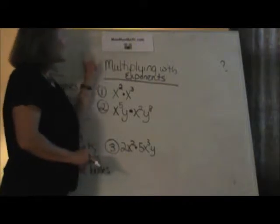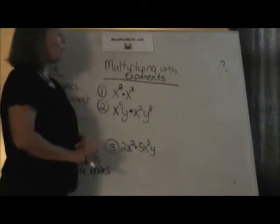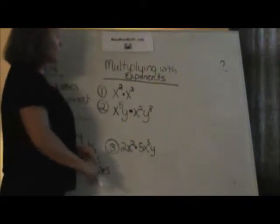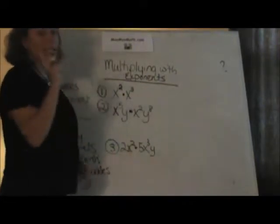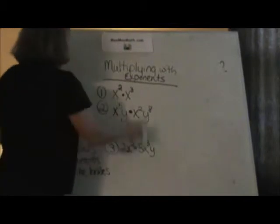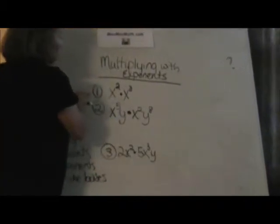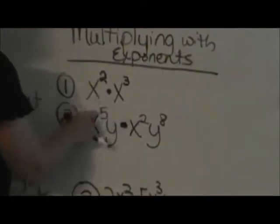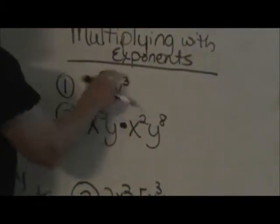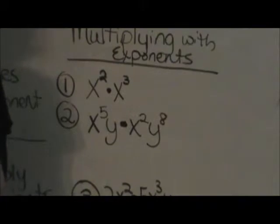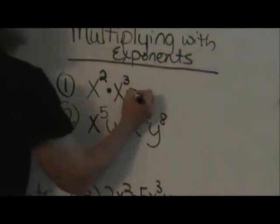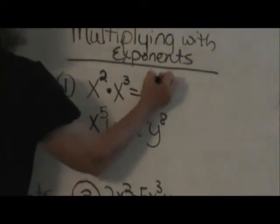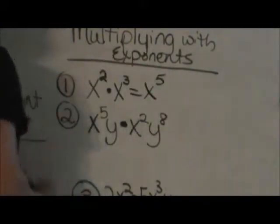Welcome to Moo Moo Math. Today we're talking about multiplying with exponents. Let's look at an example to make sure this is the correct video for you. We have x squared times x cubed. Since these are like bases, I'm going to simplify that to x to the fifth.